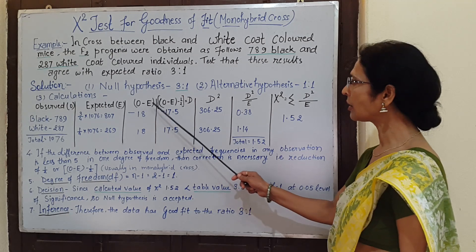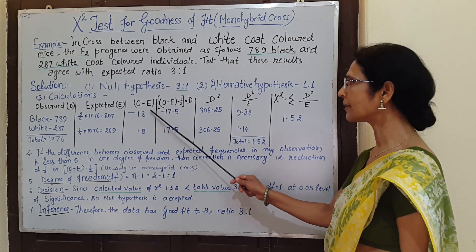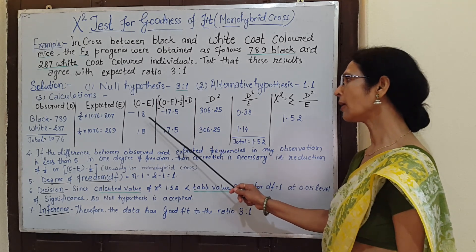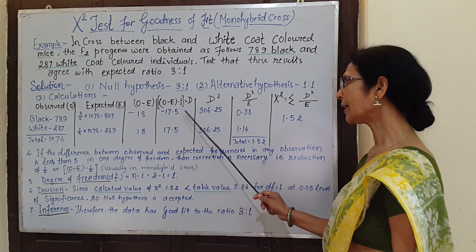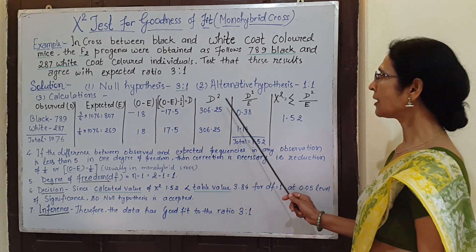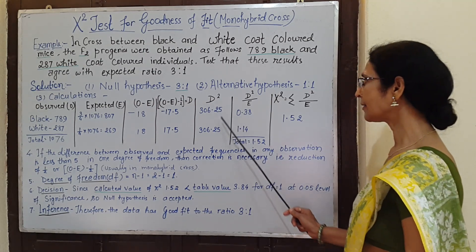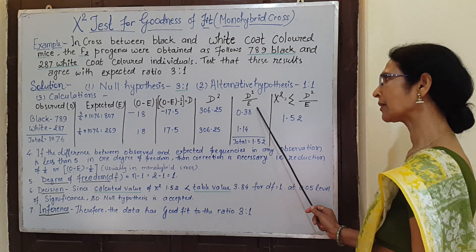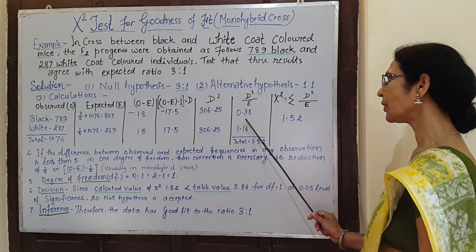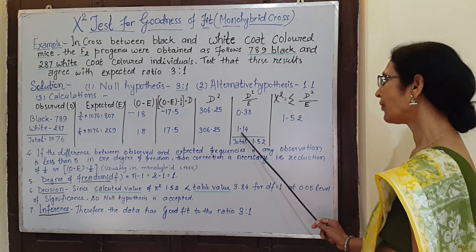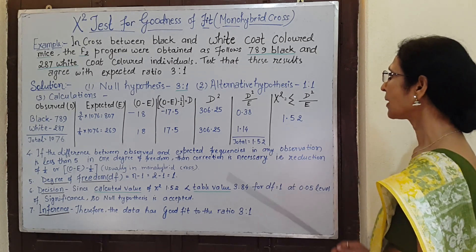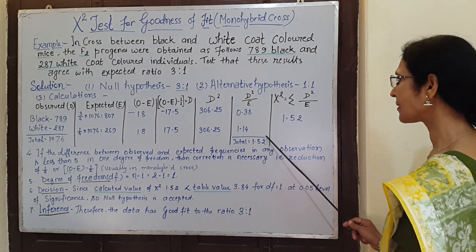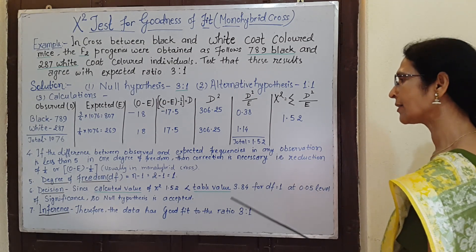Here the difference of observed and expected frequency is less than 5, so we subtract half from this difference to get this value. The whole square of the difference is written here. The whole square of difference divided by expected frequency is 0.38 and 1.14.